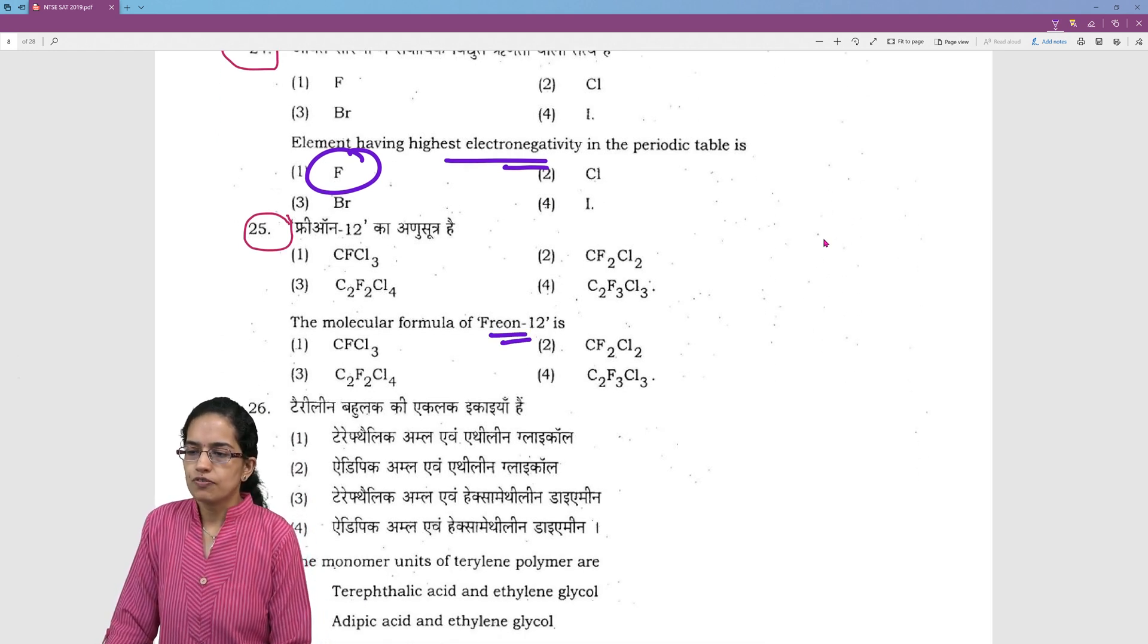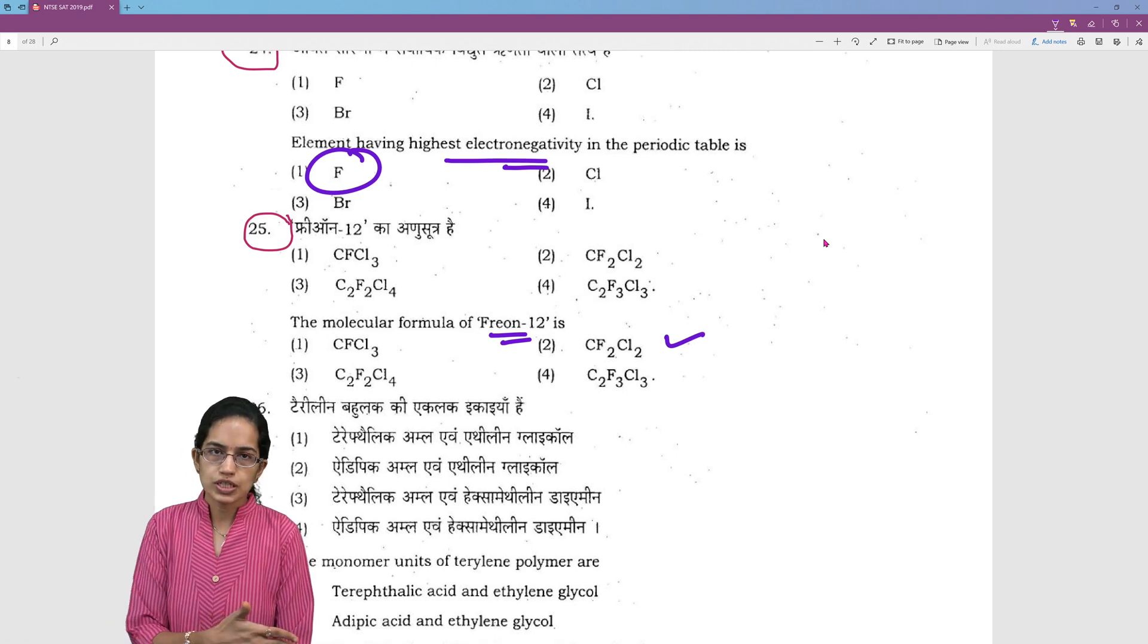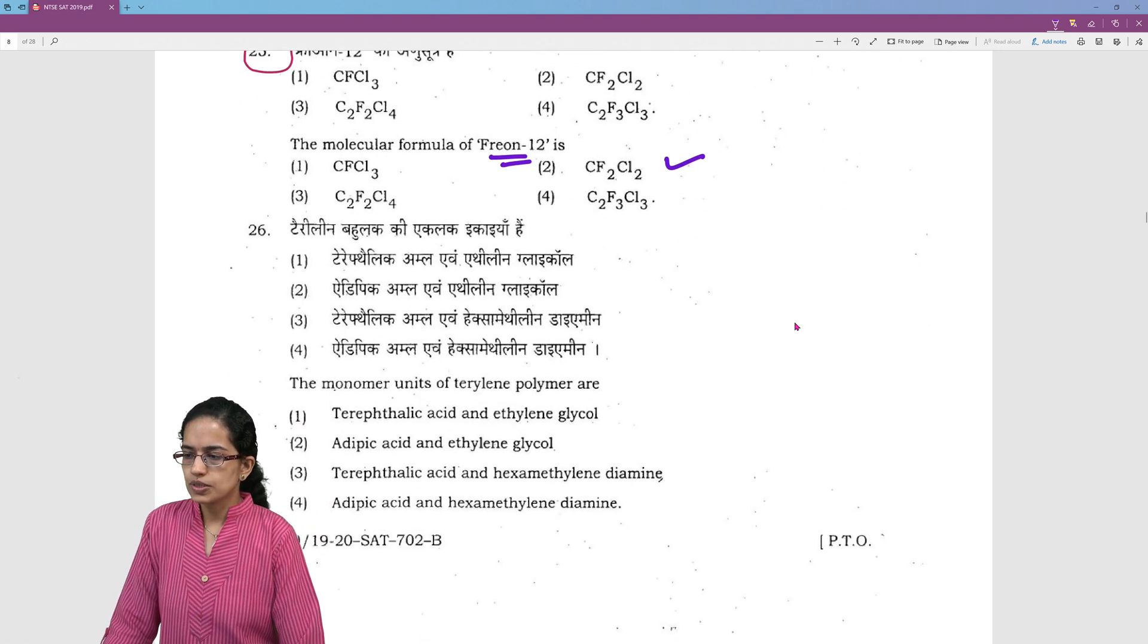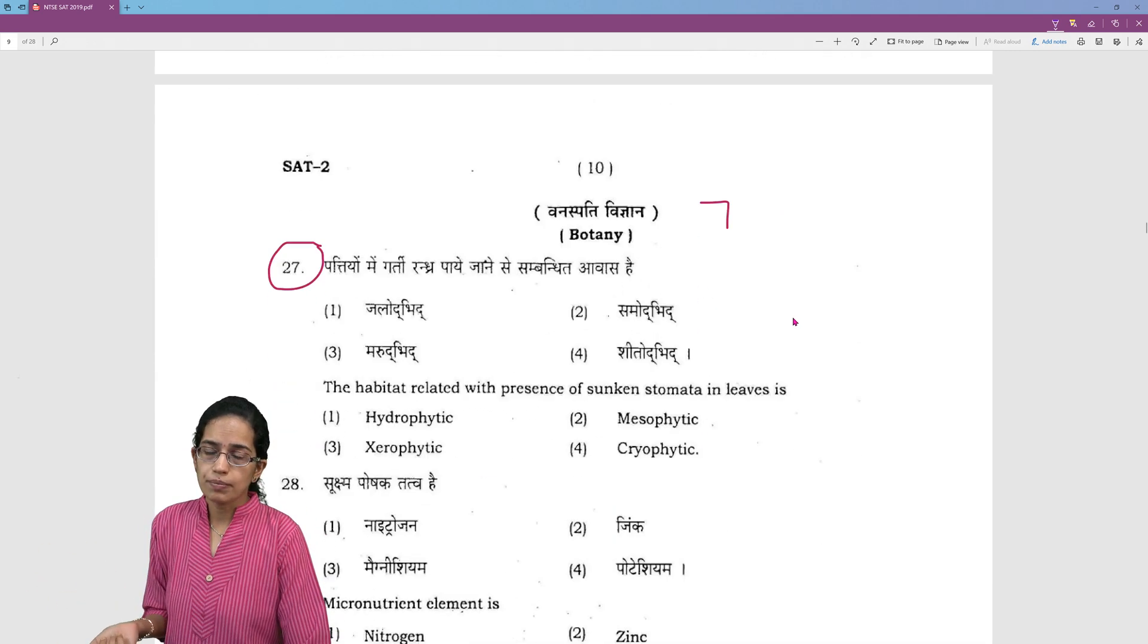The molecular formula for freon is CCl2F2 which is also written as CF2Cl2. So either of those becomes correct. Then the monomer units of various compounds are important.